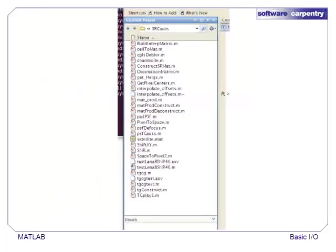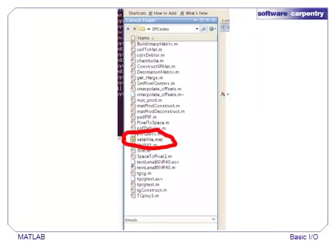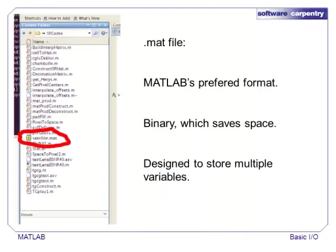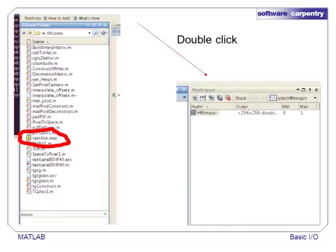The graphical interface has a box that displays the contents of the working directory. One of the files in this folder is named satellite.mat. Files with the .mat extension are MATLAB storage files that store data in a binary format. Since they are designed for use in MATLAB, MAT files can store multiple variables, which makes it easy to save an entire work session in one file. Double-clicking on satellite.mat imports all of the variables into the workspace. In this case, there is only one variable called hrimage.